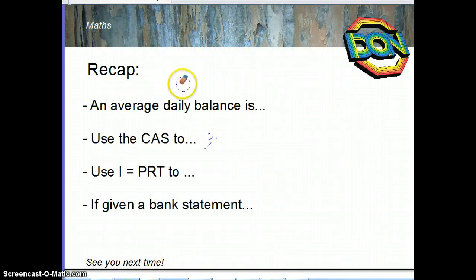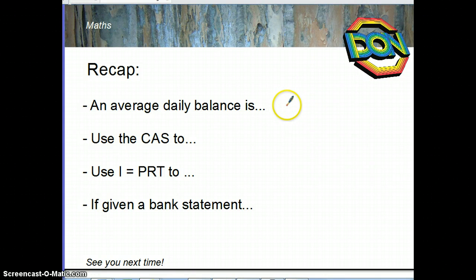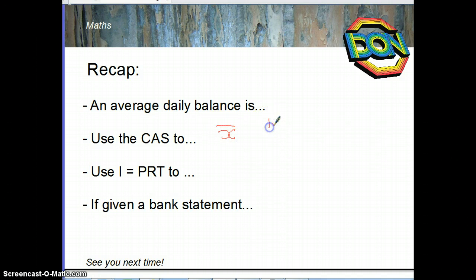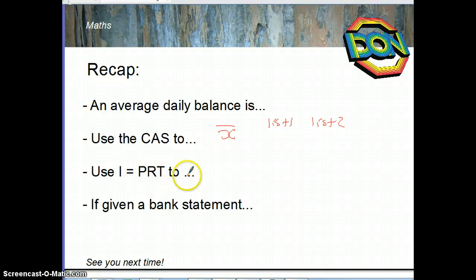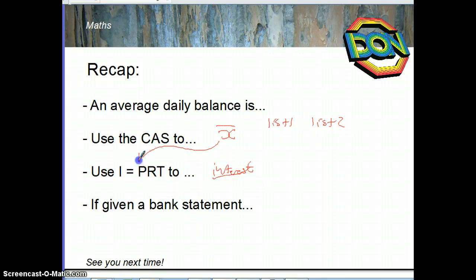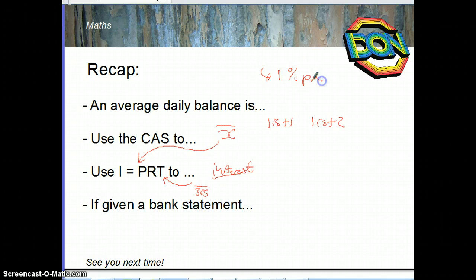Quick recap: the average daily balance is the amount in your account on average over a given period. Use the CAS calculator to find X-bar using List 1 for balances and List 2 for frequencies. Then use I = PRT, where X-bar is the principal, the rate is given, and the time is the number of days out of 365 since the rate is per annum. If given a bank statement, fill in any gaps first, then follow the same process.